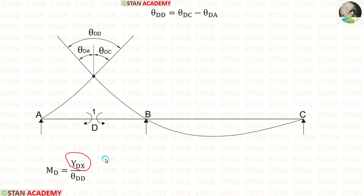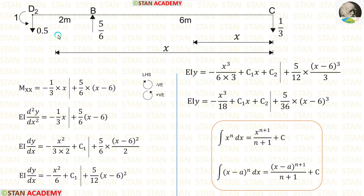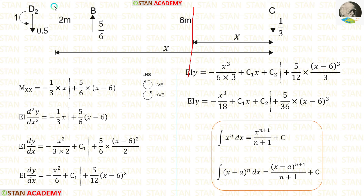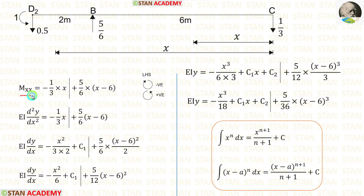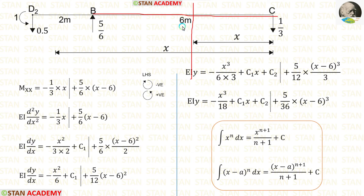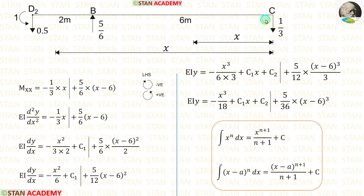First, let us take D2C and make sections to calculate YDX. In D2C, there are two different parts: D2B and BC, so we have to make two sections — one section in BC and one section in D2B. We are making both sections from point C at a distance of X. Now let us find MXX, that is the moment about the section. We consider the first section for BC; if it goes beyond 6 meters, we have to consider the second section. I am calculating moments from point C, moving towards the left hand side, so clockwise will be negative and anticlockwise will be positive.